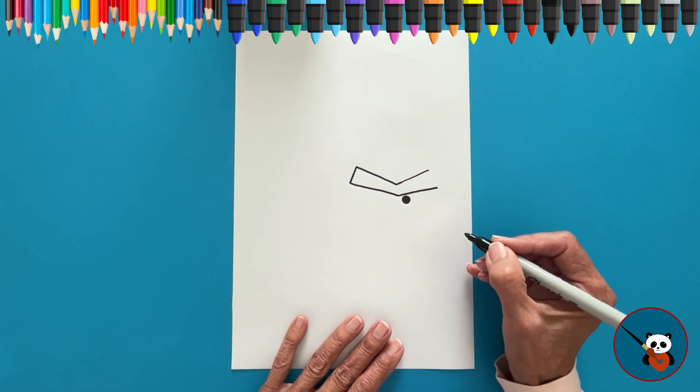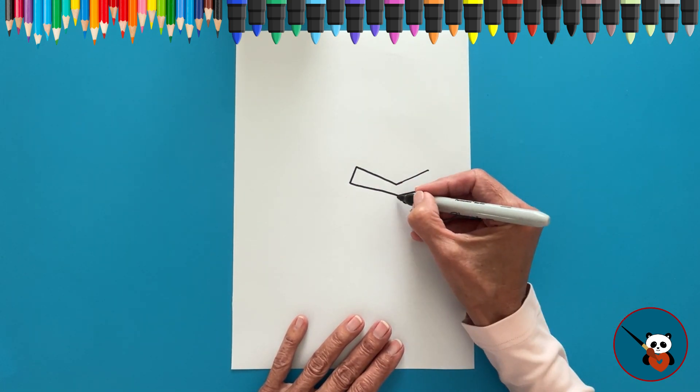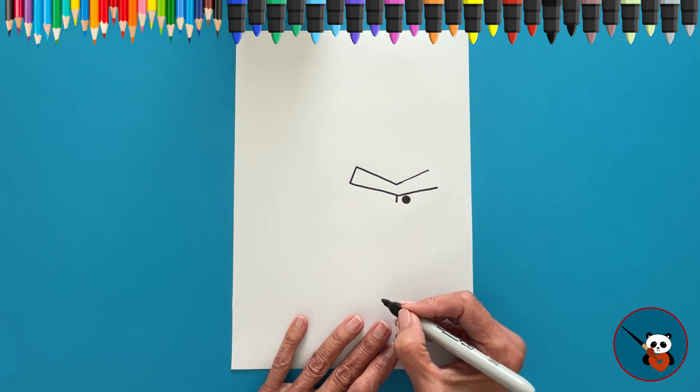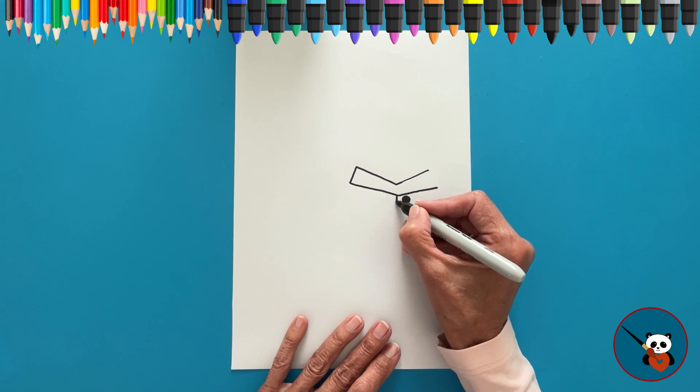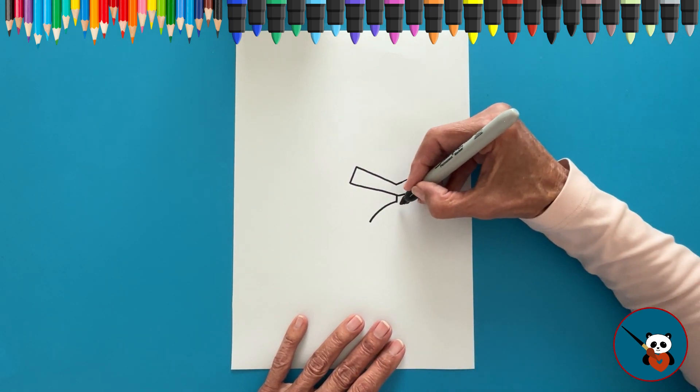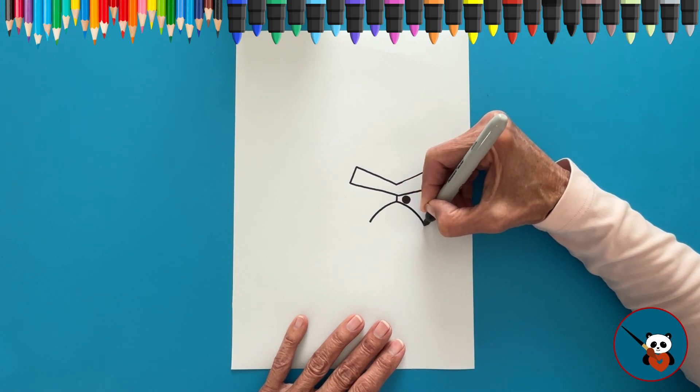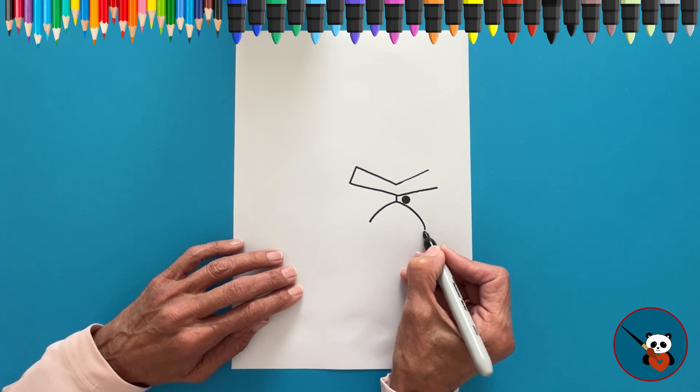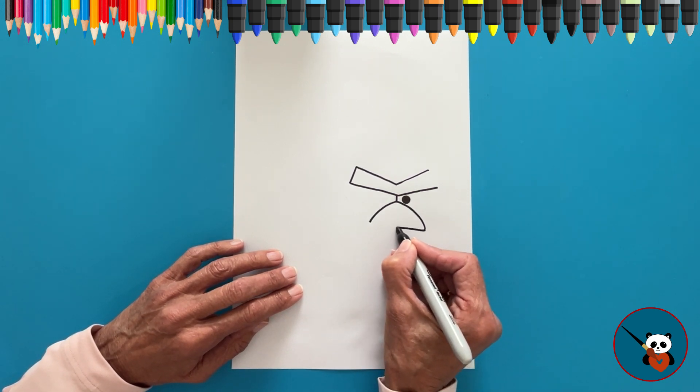Now, draw a line down below the middle of the eyebrows. Time for the beak. Draw a slightly curved line to the side and another for the other side. Connect them with a straight line.